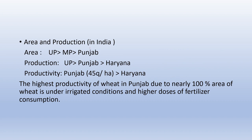Regarding area and production of wheat in India: area-wise, the highest wheat cultivation is in UP, followed by MP and then Punjab. Production-wise, UP leads, followed by Punjab and then Haryana. Productivity-wise, Punjab leads in both wheat and rice. Punjab's highest productivity is due to nearly 100% area under irrigated condition and higher doses of fertilizer. In the next two lectures, crop production will continue to be discussed.